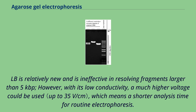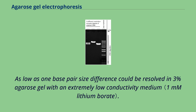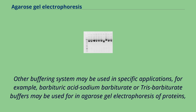As low as a one base pair size difference could be resolved in 3% agarose gel with an extremely low conductivity medium. Other buffering systems may be used in specific applications — for example, barbituric acid, sodium barbiturate, or Tris-barbiturate buffers may be used for agarose gel electrophoresis of proteins, such as in the detection of abnormal distribution of proteins.